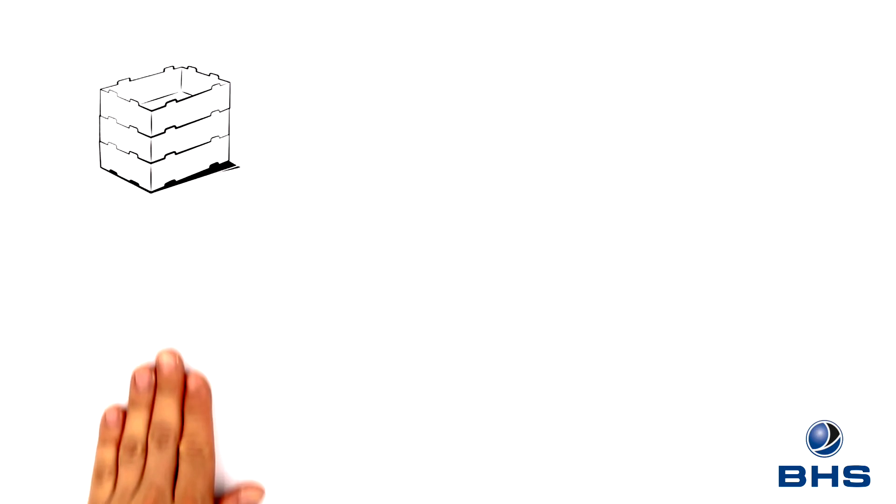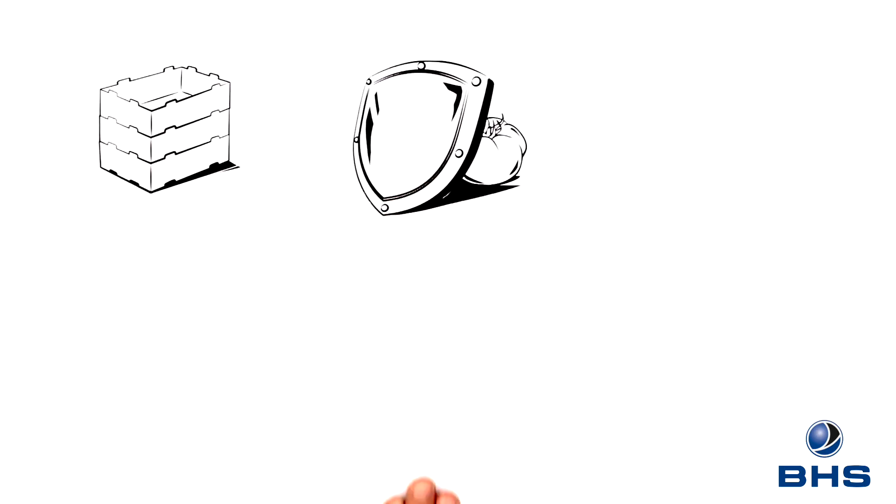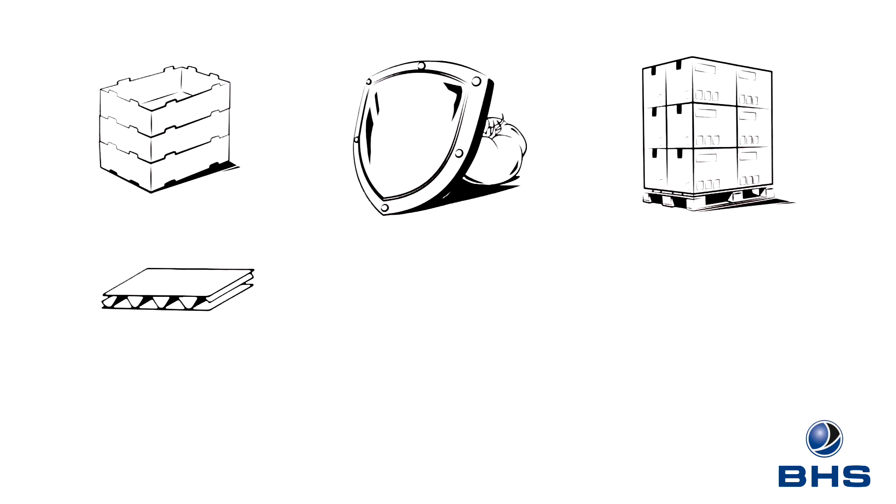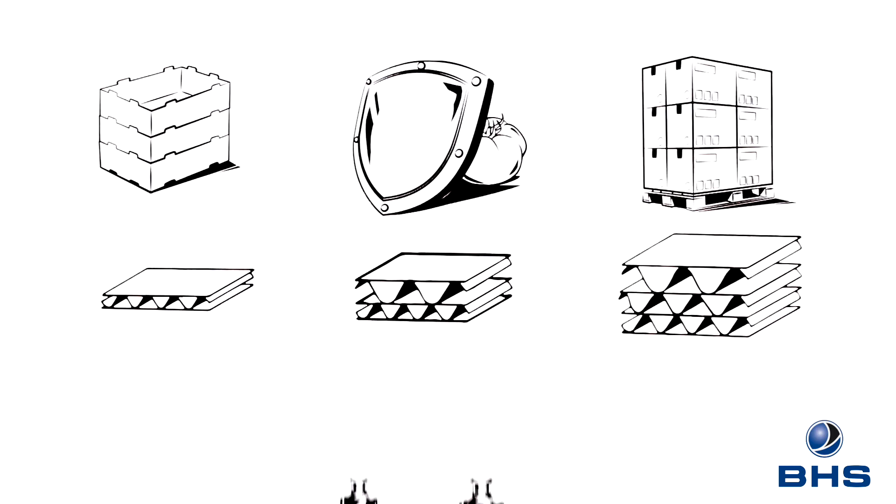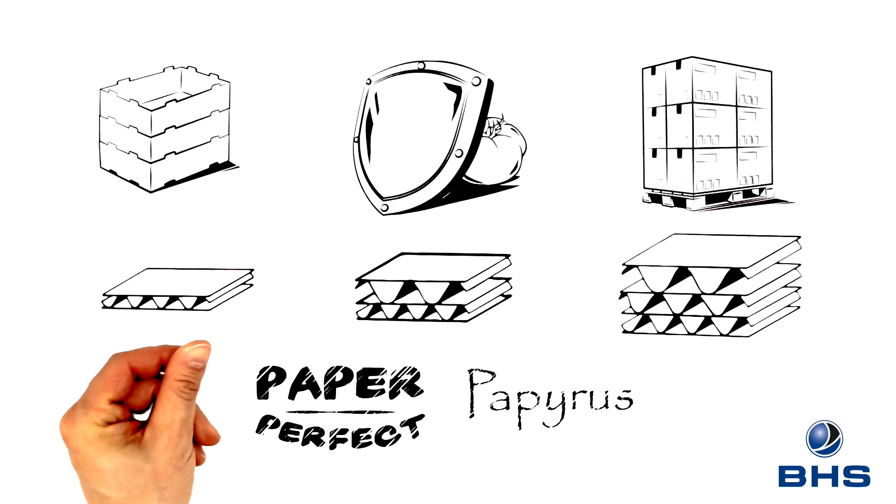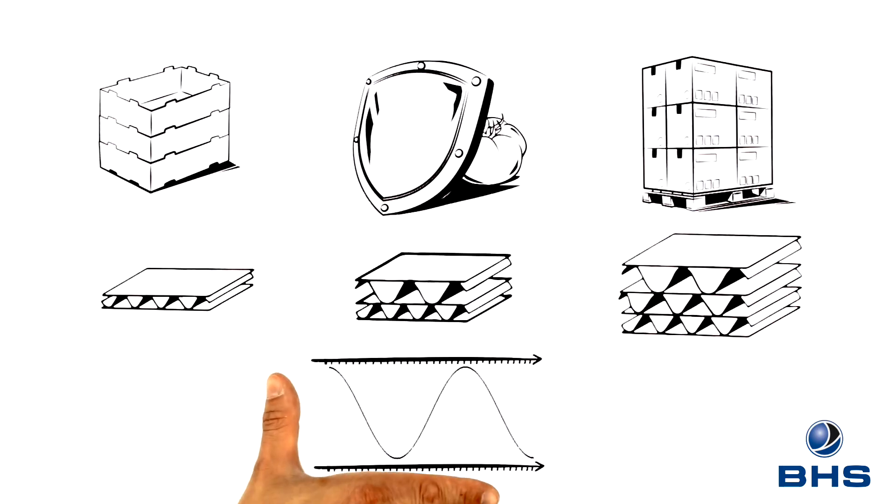To meet the different requirements of individual products, corrugated board comes in different thicknesses. A distinction is made here by grammage of the paper used, types of paper, flute height and the number of flutes. About 60% of corrugated board produced worldwide is single wall, about 30% double wall and a small proportion is also triple wall.